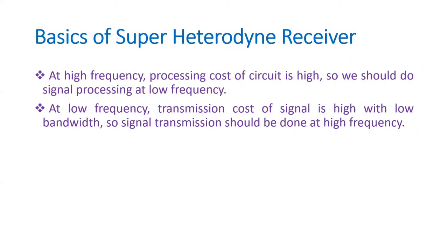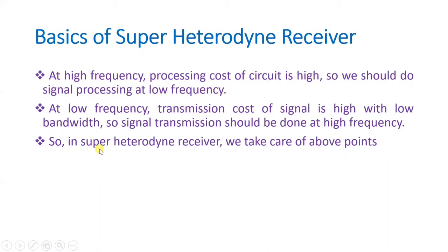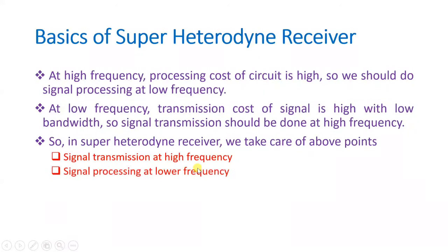In the super heterodyne receiver, we receive a high-frequency signal and convert it into a low-frequency signal for proper processing at lower cost. The agenda of the super heterodyne receiver is to translate the high-frequency RF signal into a low-frequency message signal, enabling processing on the baseband message signal. Signal transmission is done at high frequency, and signal processing is done at lower frequency.